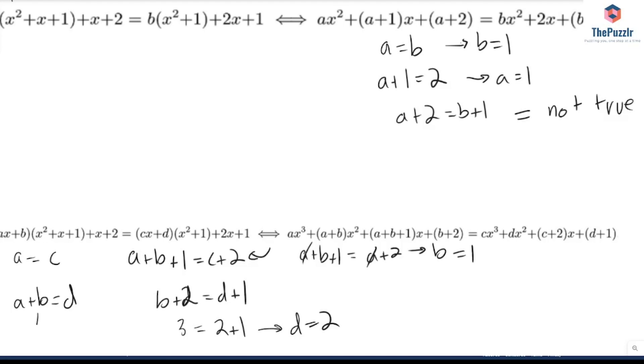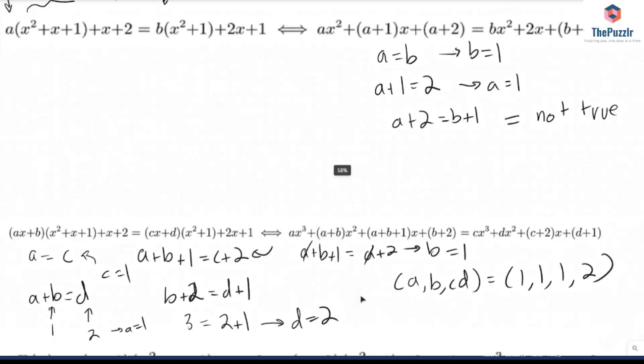Okay, so now here we have that b equals 1, d equals 2, so then a equals 1. And then a equals c, so c equals 1. So our solution a, b, c, d is equal to 1, 1, 1, and then we have 2 for d.